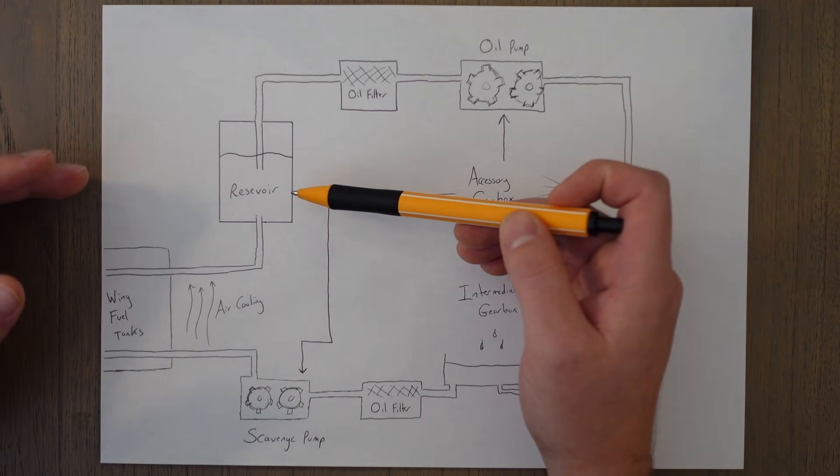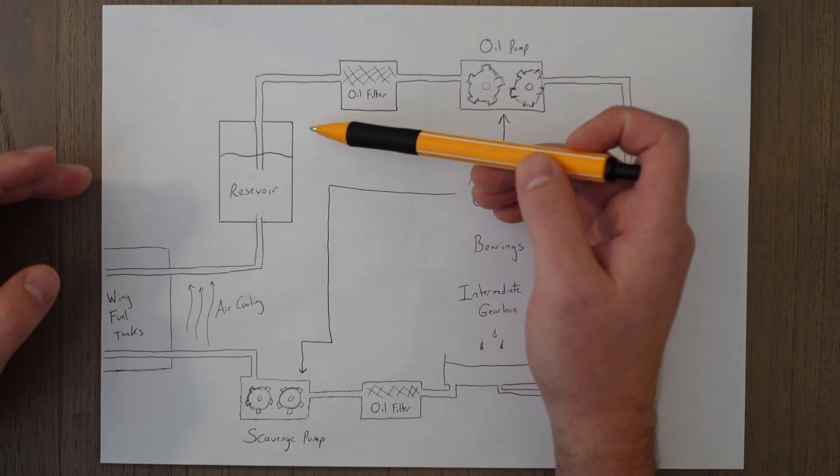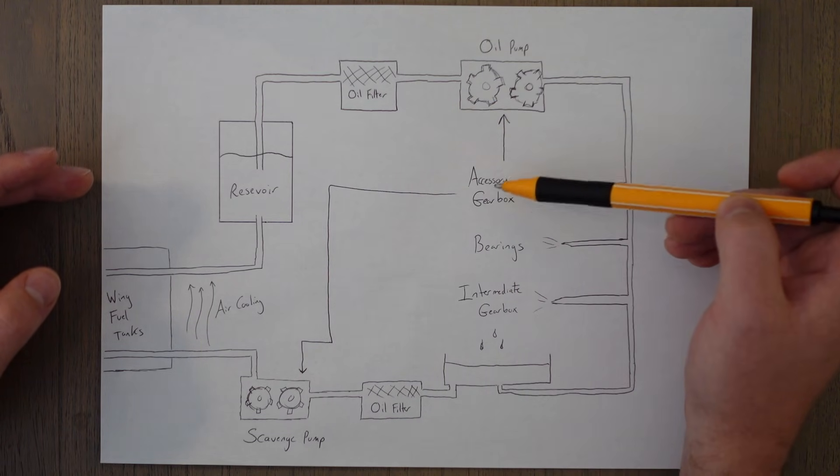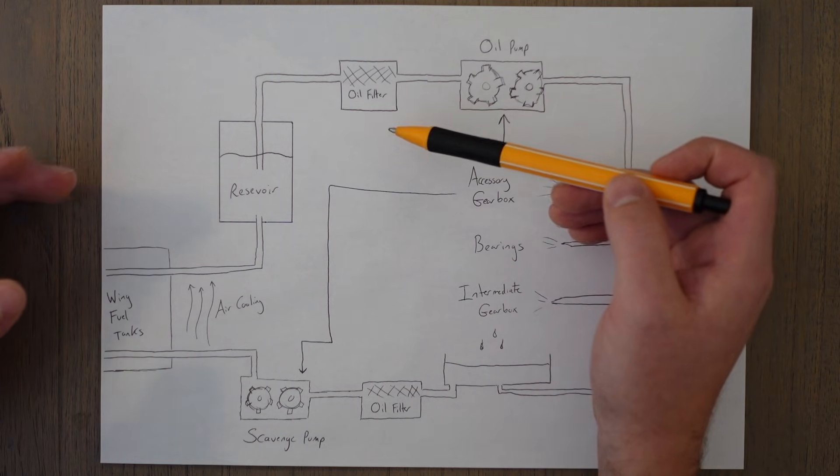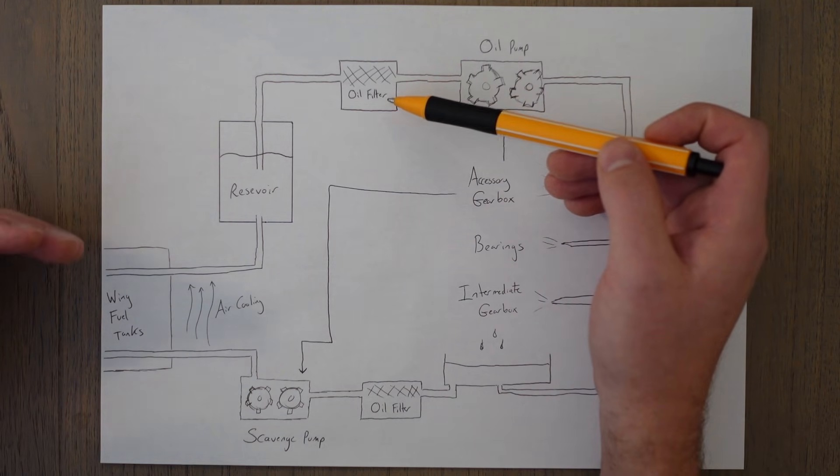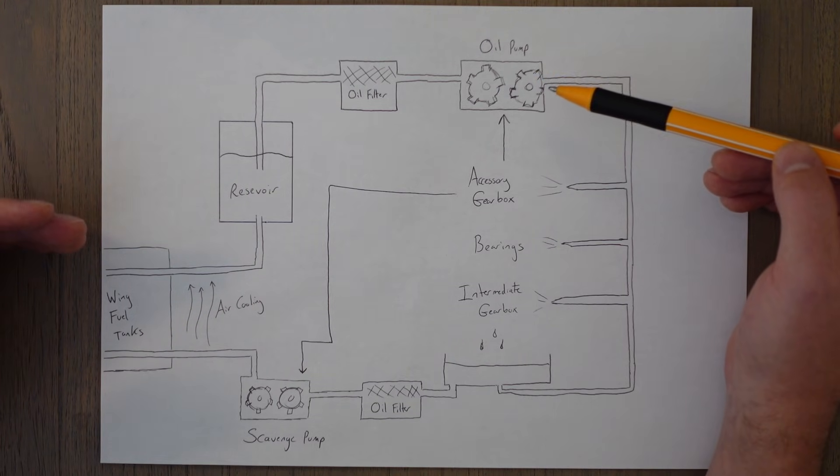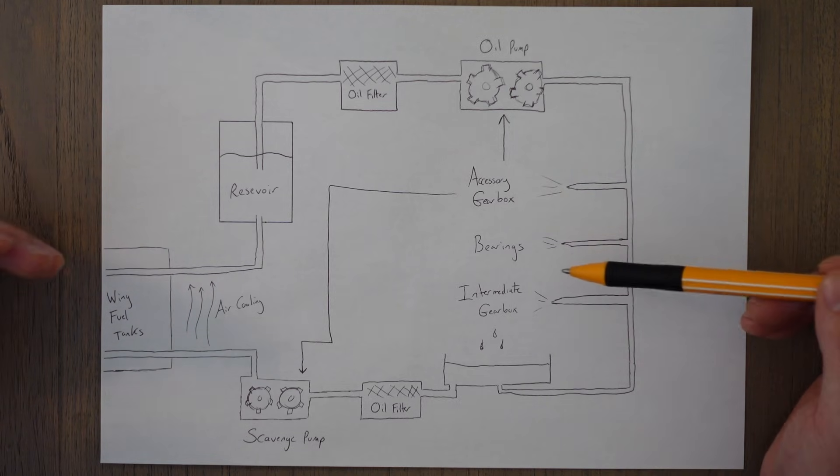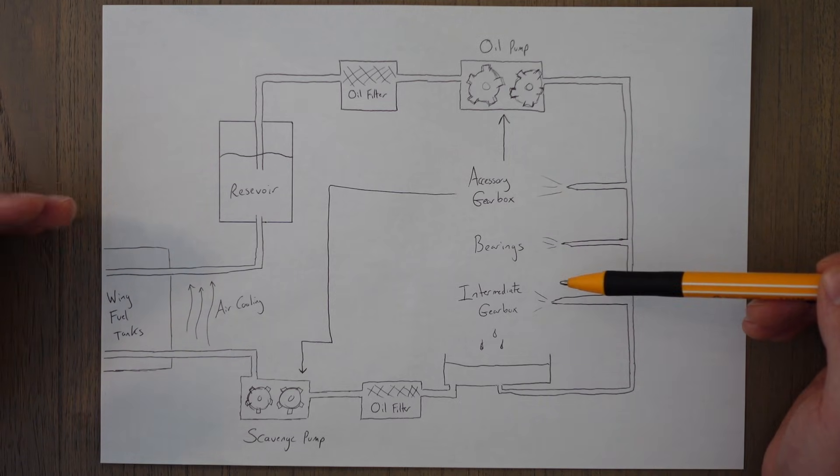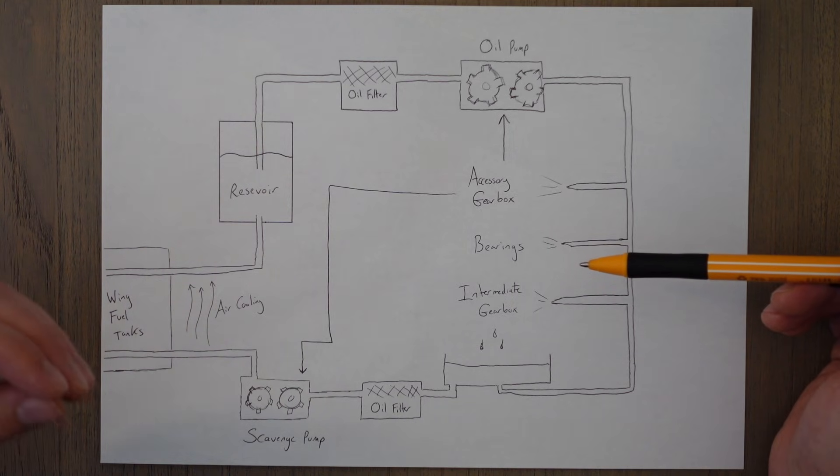In this system, oil is drawn up from a reservoir via an engine driven pump which is run from the accessory gearbox, and it passes through a filter to remove any contaminants prior to entering the pump mechanism. Then the pump delivers the oil to the components that need it, like the bearings, the accessory gearbox, and the intermediate gearbox, via oil nozzles.